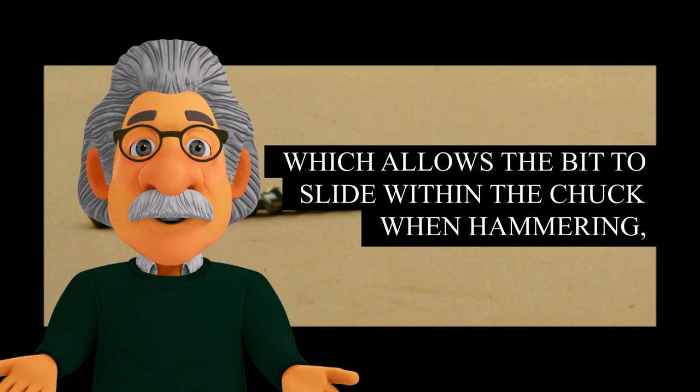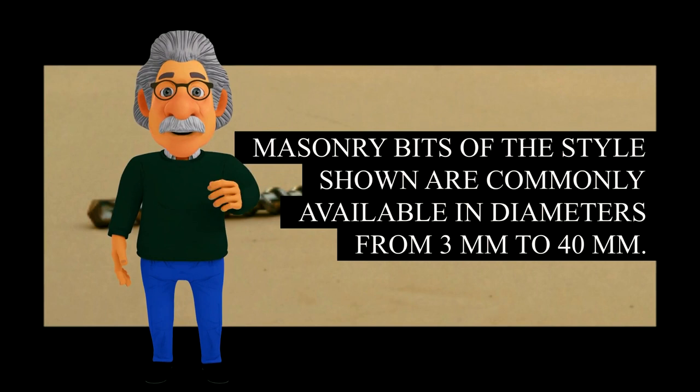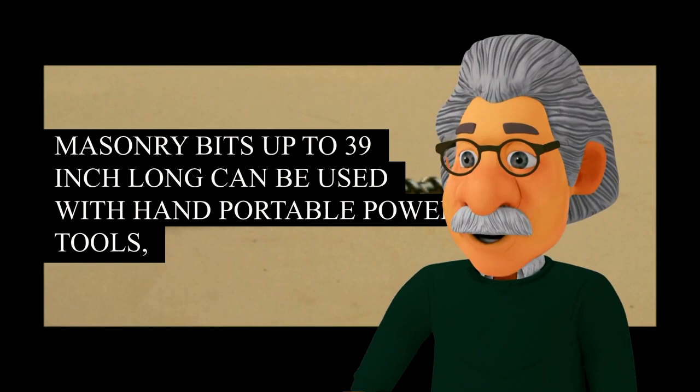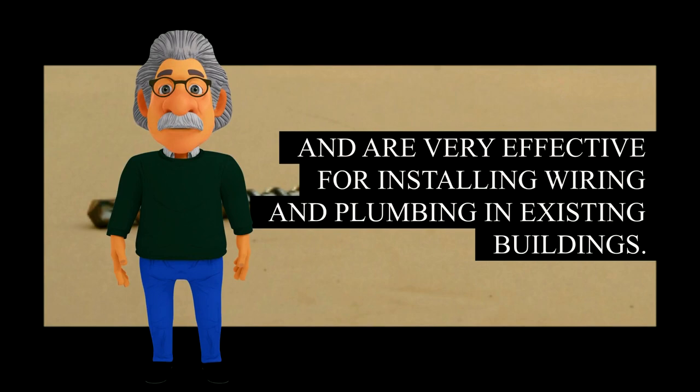Masonry bits of the style shown are commonly available in diameters from three millimeters to forty millimeters. For larger diameters, core bits are used. Masonry bits up to 39 inches long can be used with hand portable power tools, and are very effective for installing wiring and plumbing in existing buildings.